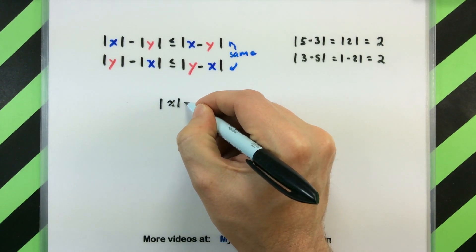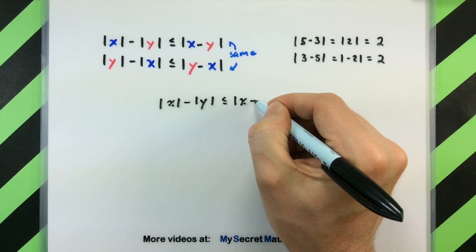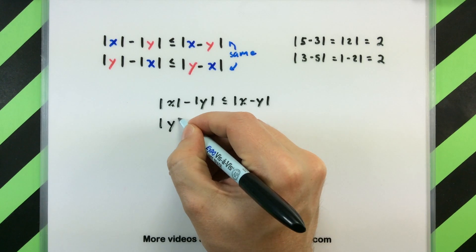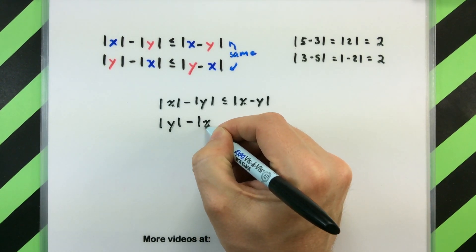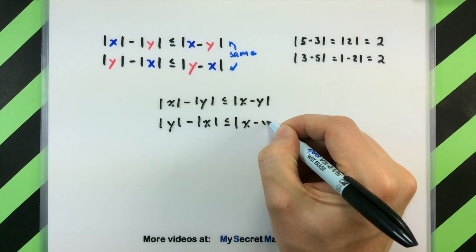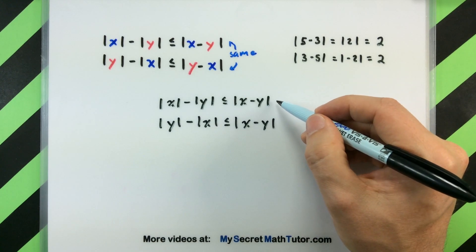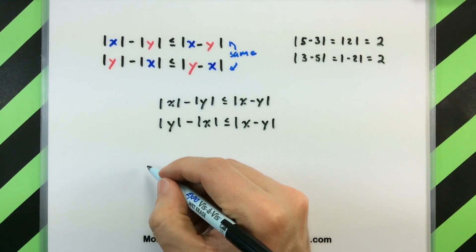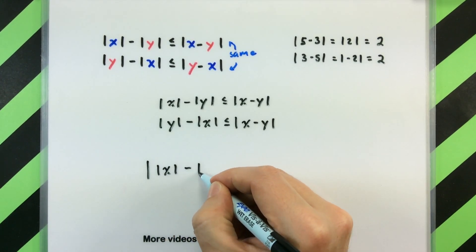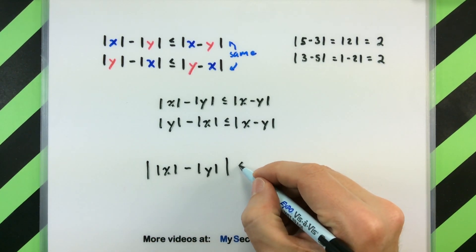So we have the absolute value of x minus the absolute value of y is less than or equal to the absolute value of x minus y. And that second one we can write as the absolute value of y minus the absolute value of x is less than or equal to the absolute value of x minus y, just reversing the order since it's the same anyway. Now that we've proven both of these inequalities, we have the reverse triangle inequality — the absolute value of x minus y is bigger than the absolute value of the difference of the two.